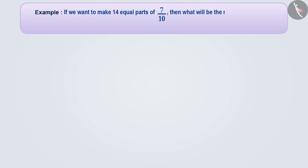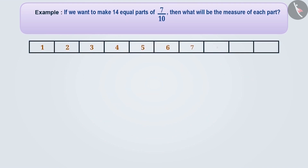If we want to make fourteen equal parts of seven by ten, then what will be the measurement of each part? We have to make fourteen parts of seven by ten and find the measurement of each part. So let's first make ten equal parts of a strip and shade seven of these. The shaded part denotes the fraction seven by ten.